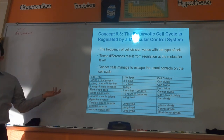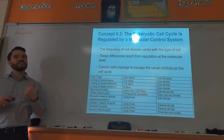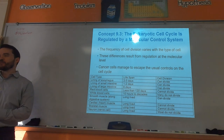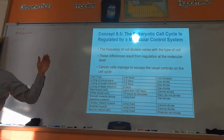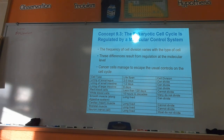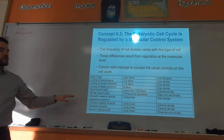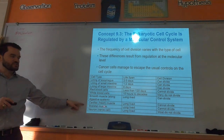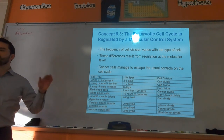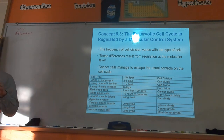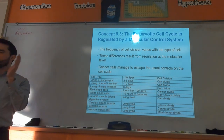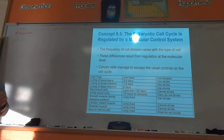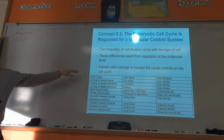If red blood cells only lasted a couple of days there'd be a lot of turnover, which wouldn't be very efficient. You don't have to memorize the lifespan of these cells, but do know that nerve and muscle cells generally don't divide, and that skin cells divide the most — understand those extremes.